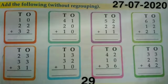Now open page number 29 of your maths book and write the date on this page. In first question, we have to add 10 plus 22 plus 32.